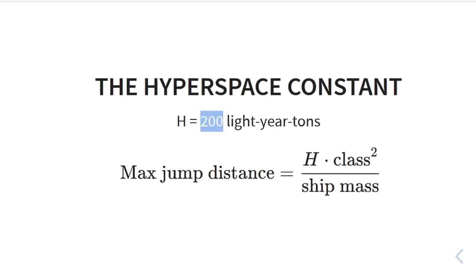This one is about the physics of hyperspace. You know, the fake physics that exists in this game. So, to start with, one number you need to know: 200. That's the hyperspace constant when measured in light year tons. This is like one of those universal constants like the gravitational constant or the speed of light. It's just the way things work.